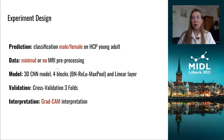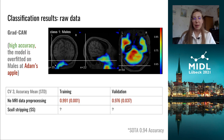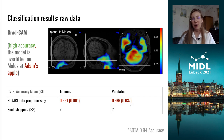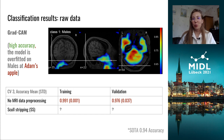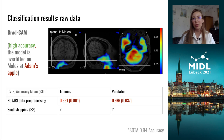We started with the raw data, and unexpectedly the classification accuracy was close to 100%, which is higher than the state-of-the-art result. We found out that the model attention was kept on the Adam's apple, so the model was overfitting on an irrelevant feature.